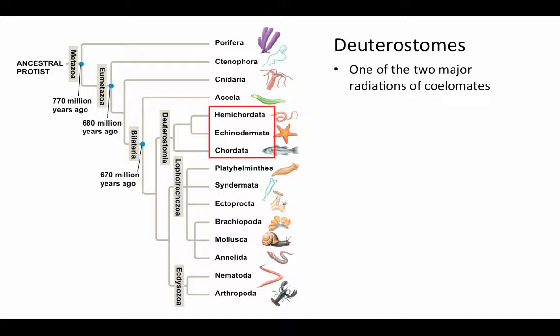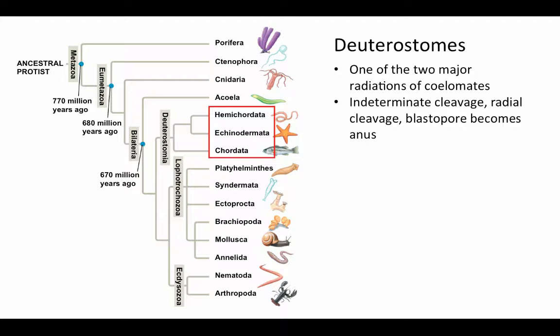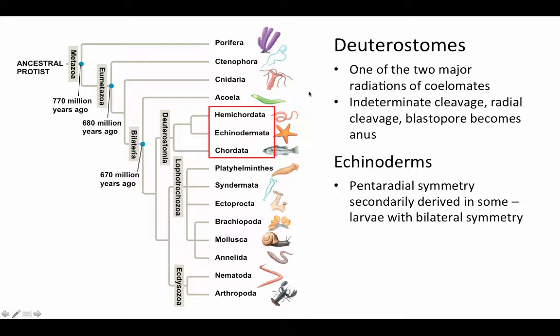Now let's move on to the deuterostomes — one of the two major radiations of coelamates, the other being protostomes. Deuterostomes are characterized by indeterminate cleavage, radial cleavage, and the blastopore becoming the anus. This suite of characteristics defines deuterostome development, though this pattern is not unique to this clade. The deuterostome clade is based primarily on DNA evidence.